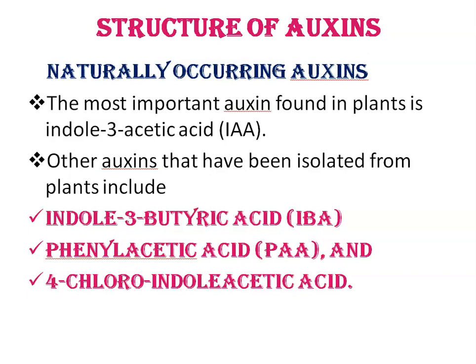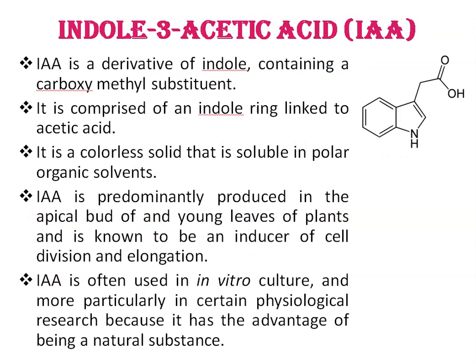Other auxins isolated from plants include indole-3-butyric acid (IBA), phenylacetic acid (PAA), and 4-chloroindole-acetic acid. First, indole-3-acetic acid (IAA): the most abundant endogenous auxin is IAA, which is able to fulfill most of the auxin actions involved in plant development and responses to the environment. Indole-3-acetic acid is the most common naturally occurring plant hormone of the auxin class.